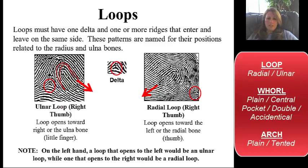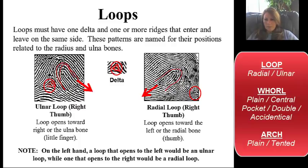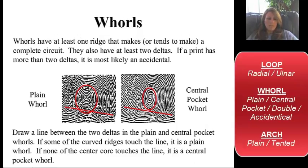The other thing to look at is something called a delta — this is a ridge characteristic. A delta is basically a triangle; that's why you have the deltoid muscle in your shoulder. So right here is a delta, and the loop is going to open up away from the delta. Here's a radial loop — here's the loop, here's the open end on the right thumb, and here's the delta. The open end is away from the delta.